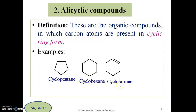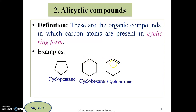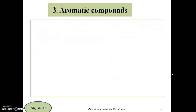The third example looks like cyclohexane but has a double bond, so compounds with a double bond are known as alkenes, and we name it cyclohexene. In all these examples, carbon atoms are present in cyclic ring form — either 5-membered, 6-membered rings, and so on. This is about alicyclic compounds.